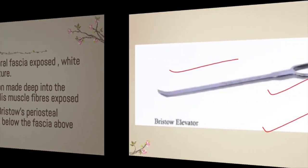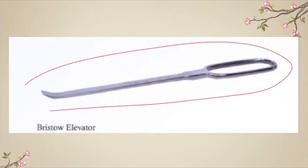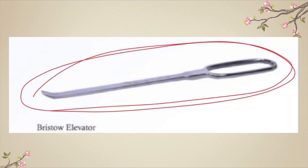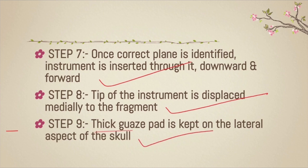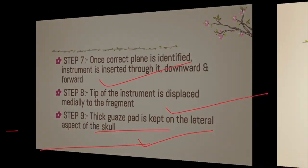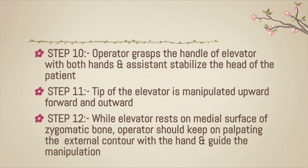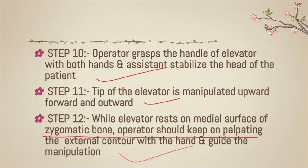Remember the instrument — the long Bristowe periosteal elevator — which is very important. Step seven: once the plane is correct, pass the instrument downward and forward. Step eight: tilt the tip of the instrument medially. Step nine: a thick gauze pad is kept on the lateral surface of the skull to avoid injury. Step ten: the operator grasps the handle with both hands and manipulates the tip upward, forward, and outward — U, F, O — so the elevator rests on the medial surface of the zygomatic bone.